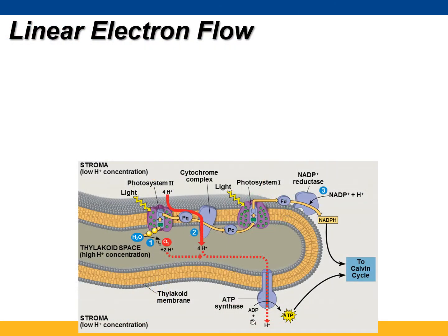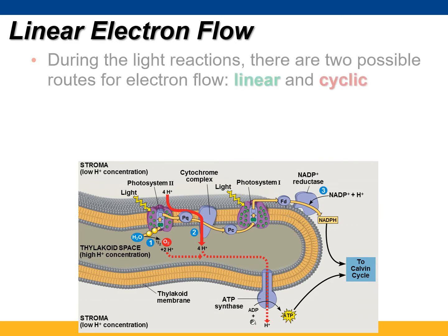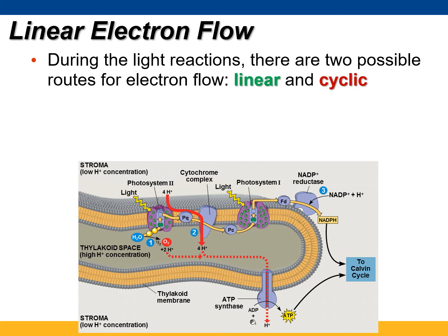When we have photosynthesis occurring, especially at high levels, we actually have two pathways that occur. The pathway that we've mostly talked about, which is linear, and then this alternative pathway which is called cyclic. They both use pretty much the same infrastructure, but let me show you the electron flow here.